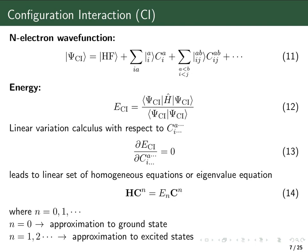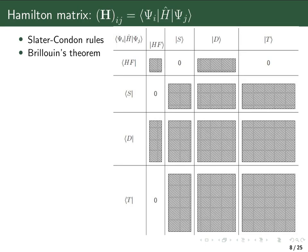We obtain the orbitals from a Hartree-Fock calculation and then keep them fixed — we don't change them anymore. With those fixed orbitals, we generate all those Slater determinants. One might then ask: would it not be possible to also change the orbitals during the calculation when we change the configuration-interaction coefficients? Now let's look at this Hamiltonian matrix, where the wave function in the bra and the ket are the Slater determinants in which we expand our wave function.